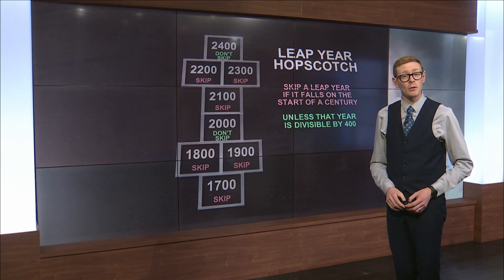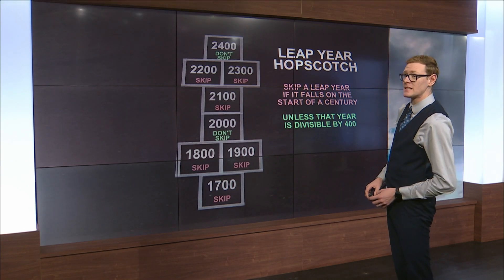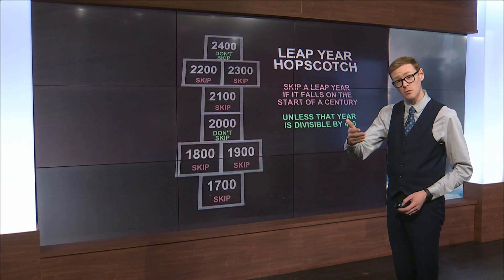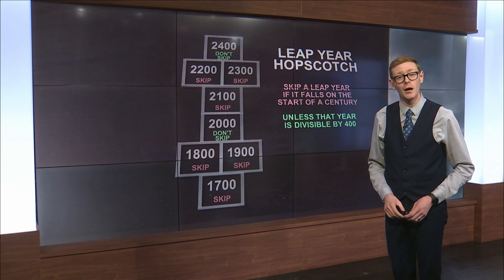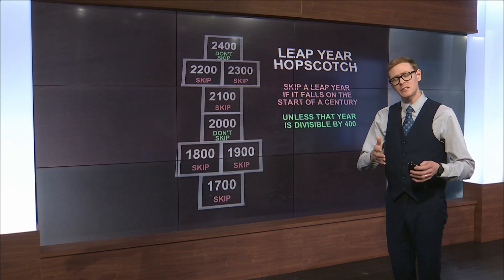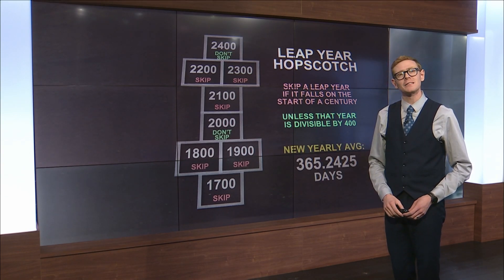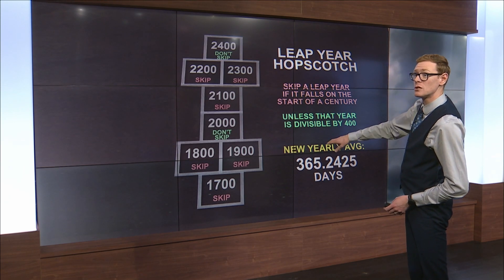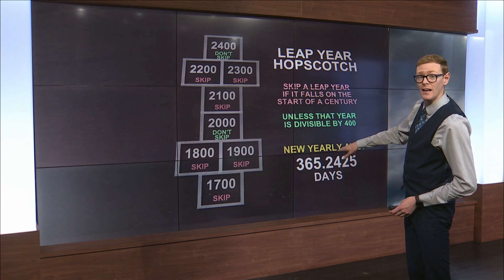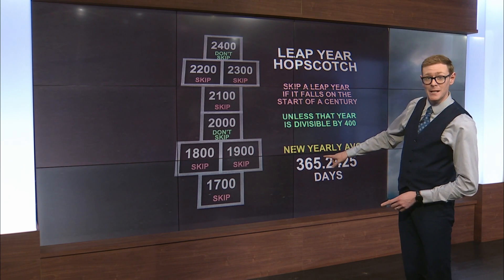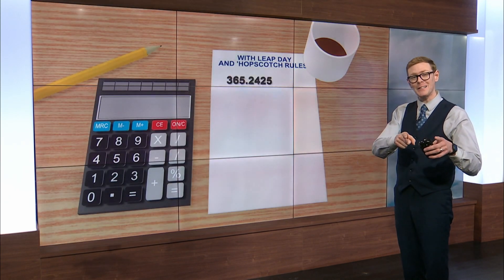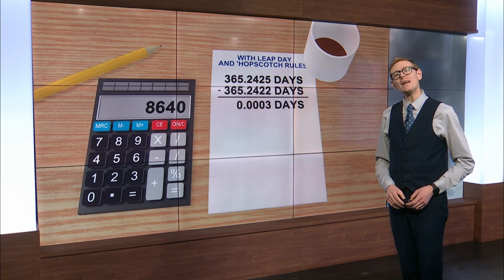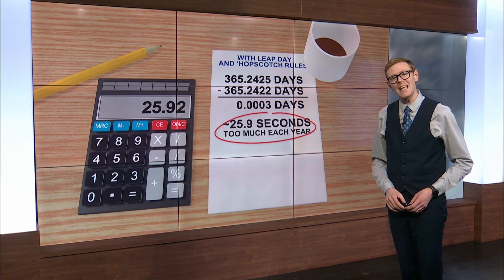The last leap year we skipped was 1900, and the next one we skip will be 2100. That math brings our average to 365.2425 days. Going back to the calculator, we're still off by about 26 seconds.